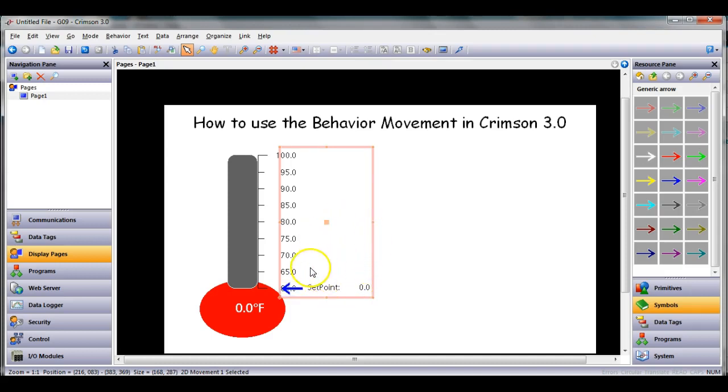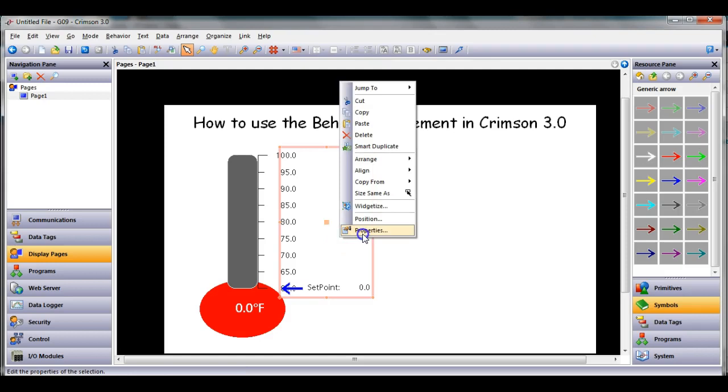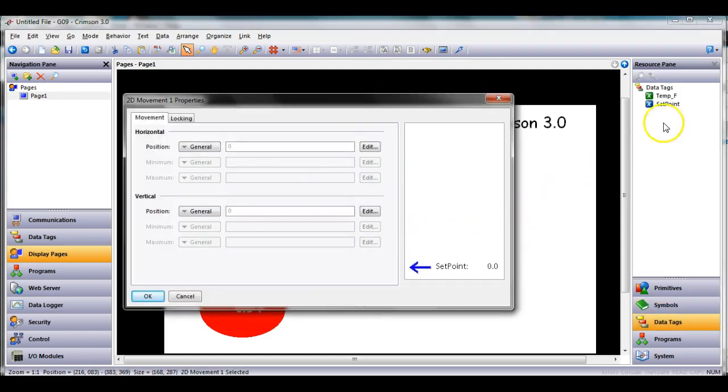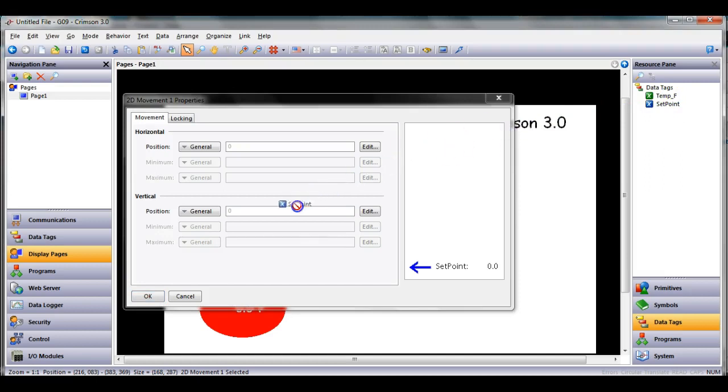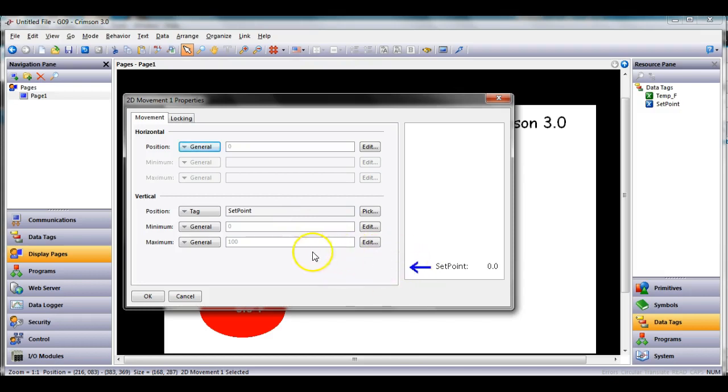Now what I need to do is link the movement of this to the tag called setpoint. I'm going to right click on this guy, go to properties, and drag setpoint from the right side into the vertical field.